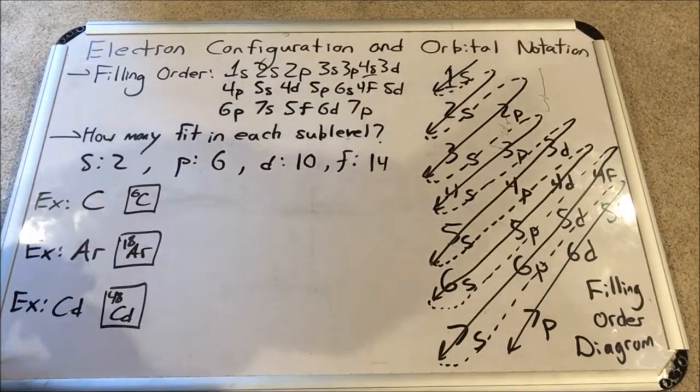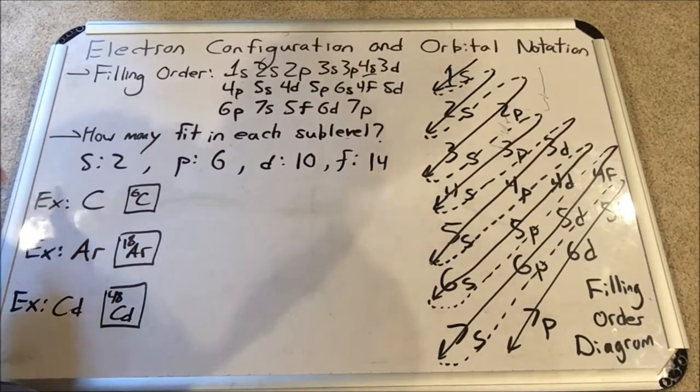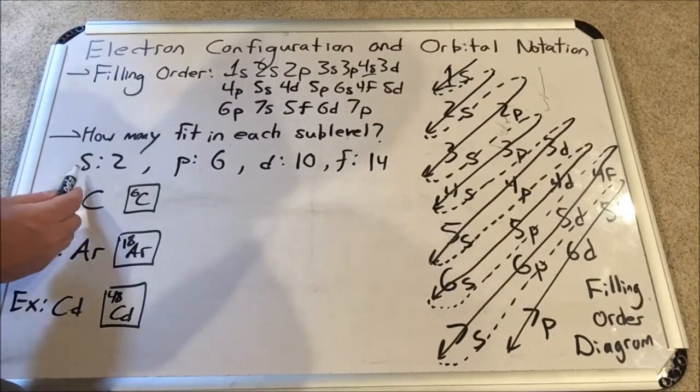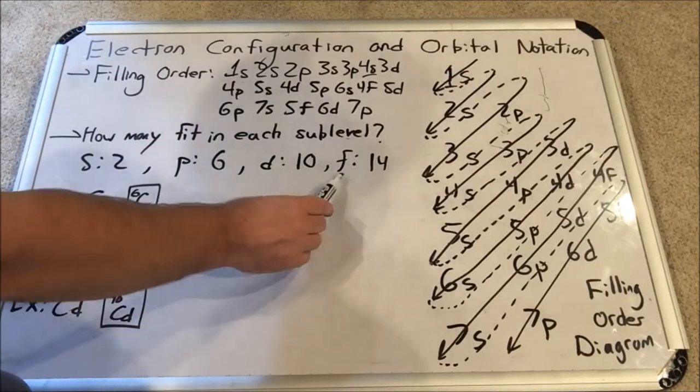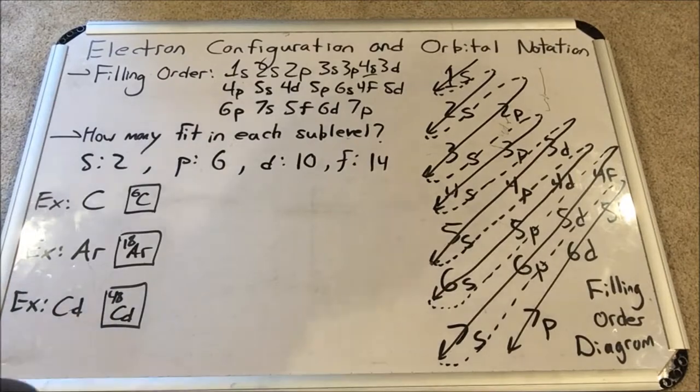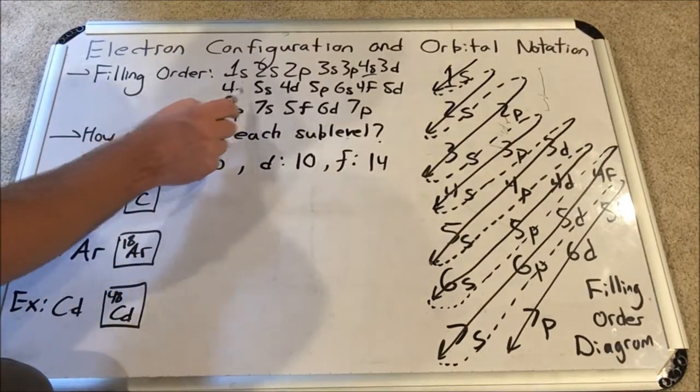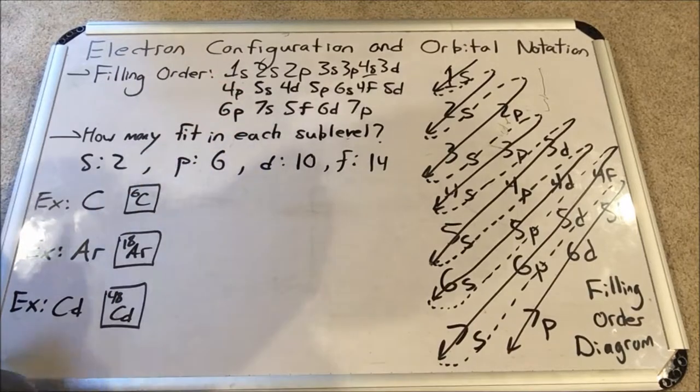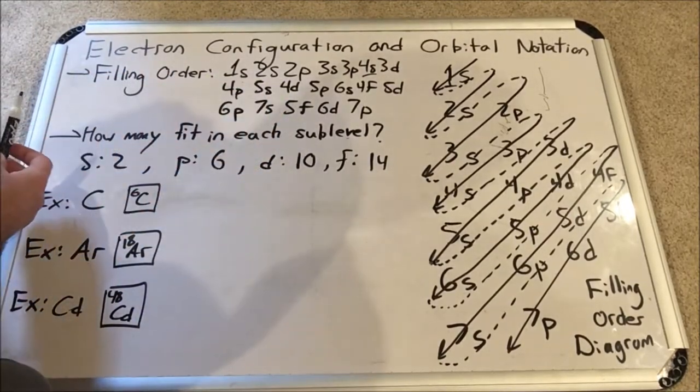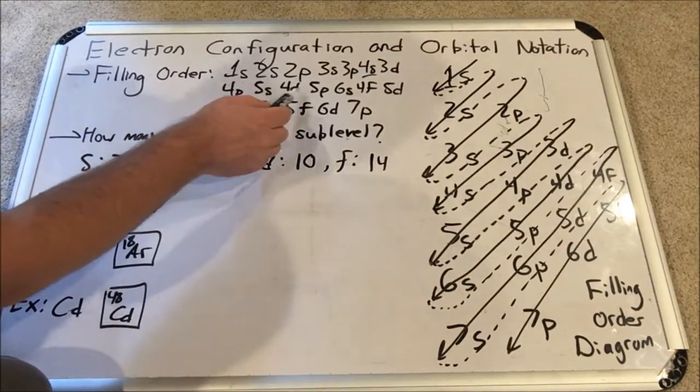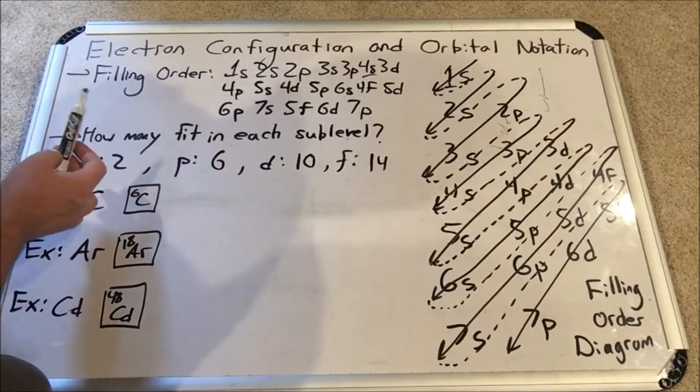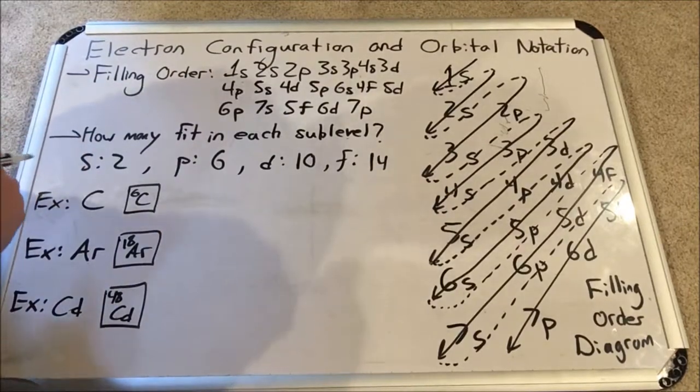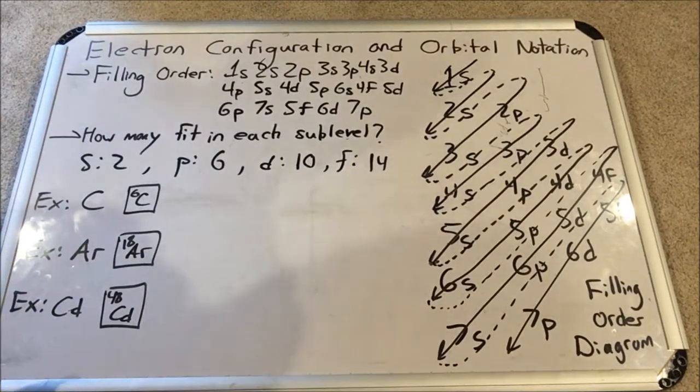We will fill 4S, and then we will go back and fill the 3D sublevel. Then principal energy level 3 is done. We have started level number 4 right here. Then we will continue with level 4 and fill 4P. Now 4 actually has S, P, D, and F sublevels, but F has such a high overall average energy that it takes forever to get to it in this list. After 4P, then we postpone filling 4D and we go to the next principal energy level 5, and we fill its S sublevel. Then we go back and fill 4D.